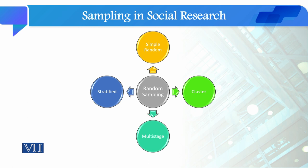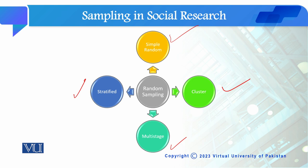Regarding the types of probability sampling, there are four basic types. The first is simple random sampling. Then there is stratified and cluster sampling, which differ from each other in their characteristics. The fourth type is multi-stage sampling, which combines two or even three sampling types together. We will examine all four types in detail in the upcoming modules.